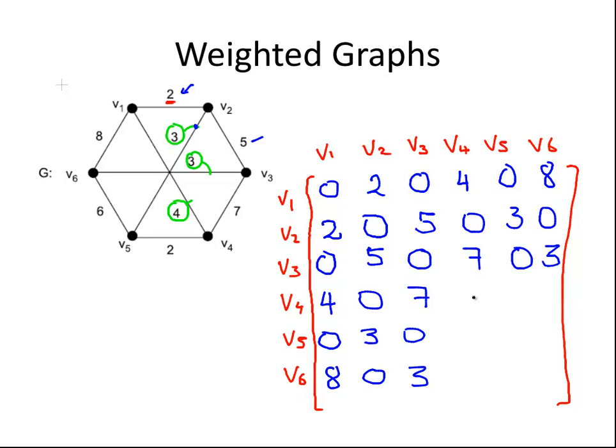Now we're going to look at V4. It's connected to V1 with a weighting of 4. V2 with no edge. It's connected to V3 with a weighting of 7. It's not connected to itself. It is connected to V5, so we have a 2 there because the weighting is 2. And it's not connected to V6. Once again, 2 and 0.